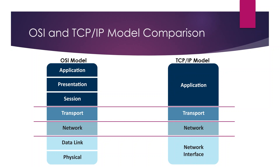Knowing how the OSI and TCP/IP models map to each other is useful — if you know what occurs at the OSI layers, you can infer what happens at the corresponding TCP/IP layers. For example, the TCP/IP Application layer handles user interaction and data generation, encryption and decryption, and connection establishment, because those are the functions of the three OSI layers it encompasses.